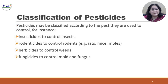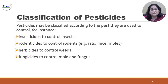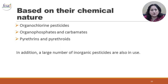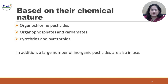Pesticides can be classified according to the pest they are used to control. Insecticides are used to control insects, rodenticides to control rodents like rats, mice and moles, herbicides to control weeds, and fungicides to control mold and fungus. Based on their chemical nature, pesticides can also be classified as organochlorine pesticides, organophosphates and carbamates, pyrethrins and pyrethroids. In addition, a large number of inorganic pesticides are also in use.